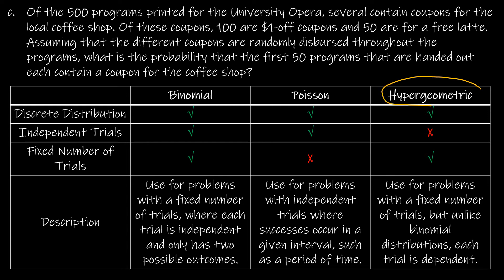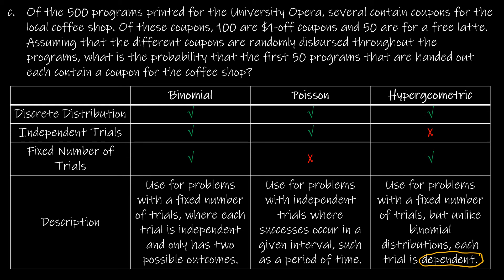The last one is going to be hypergeometric. We have 500 programs printed, and several contain coupons for the coffee shop — 100 are $1 off and 50 are for a free latte. Assuming the different coupons are randomly dispersed throughout the programs, what is the probability that the first 50 programs handed out each contain a coupon for the coffee shop? We have success or failure, so it's binomial or hypergeometric. The key difference is whether trials are independent or dependent. Here, if you get a program with a coupon, there is one less coupon anyone else can get — so these are dependent trials, making it hypergeometric.